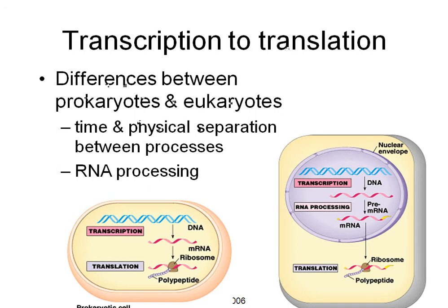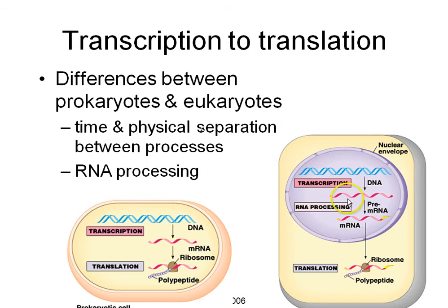Remember that bacteria have no nucleus, so they can do transcription and translation at the same time. The messenger RNA doesn't need to leave the nucleus. In us eukaryotes, we have transcription happening in the nucleus. This is the process of making messenger RNA. Remember, we have to cut out introns, and add a poly-A tail and a 5' cap in a process called RNA processing after transcription.